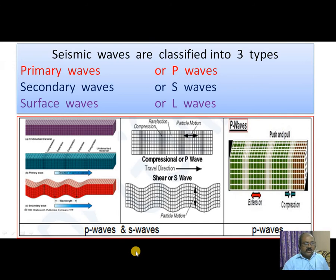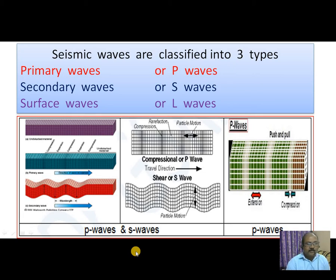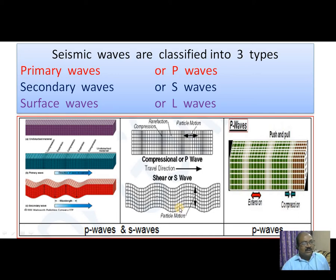Seismic waves are classified into three categories: Primary waves, called P waves; Secondary waves, called S waves; and Surface waves, called L waves, which are longitudinal waves.